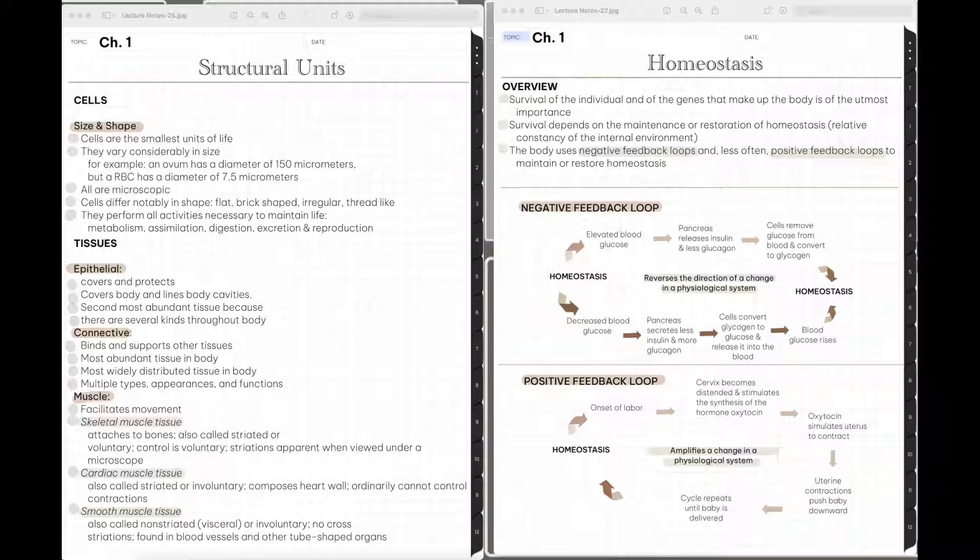So her cervix is going to become distended. When her cervix becomes distended or starts to thin out, that's going to stimulate the synthesis of the hormone oxytocin. Oxytocin then stimulates uterine contraction. Uterine contractions will then start to push the baby downward. And this whole cycle, the cervix thinning out, the oxytocin making the uterus contract, the contractions pushing the baby downward is going to continue until the baby is delivered. And so it is amplifying that change from being pregnant to delivering the baby. So that's the example of a positive feedback loop.